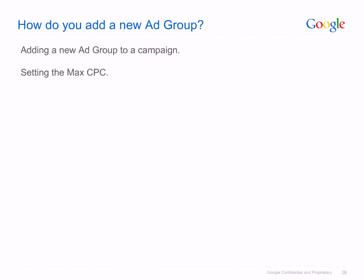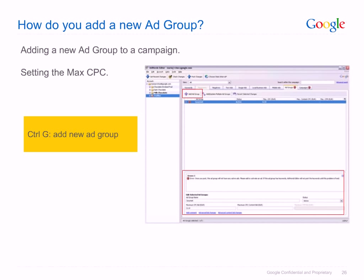To add a new ad group to your campaign, click on the plus icon highlighted and set the desired Max CPC. If you wish to use a keyboard shortcut, press Ctrl plus G. In this example, we added the group Gourmet to the Truffles campaign and set the Max CPC to 0.10.